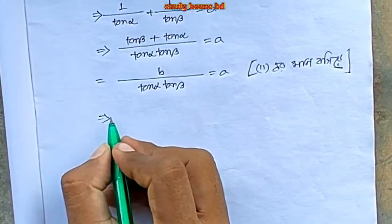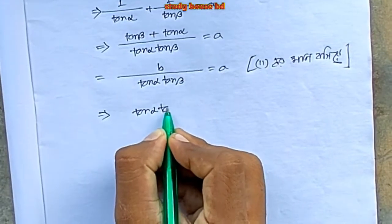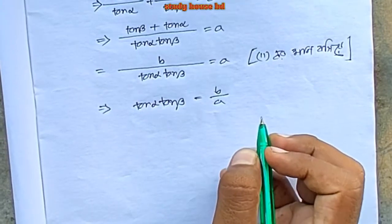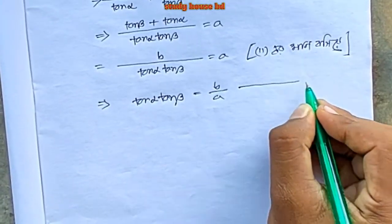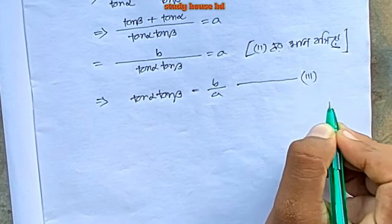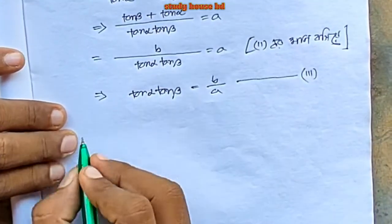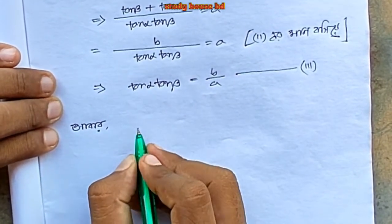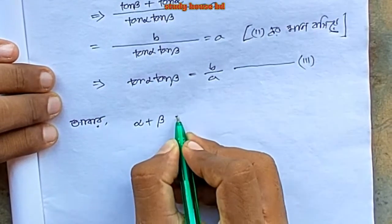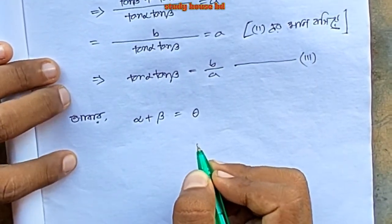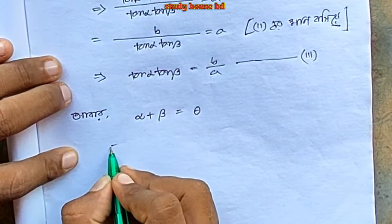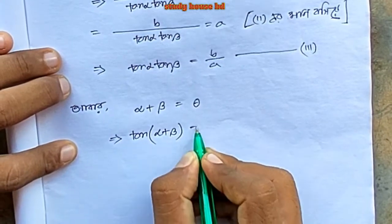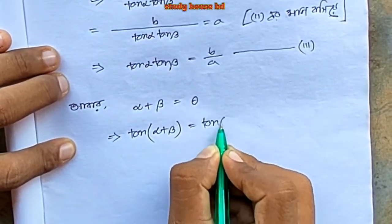So tan alpha, by b, is a number. From this we have alpha plus beta equal theta. We have tan theta, tan(alpha + beta).